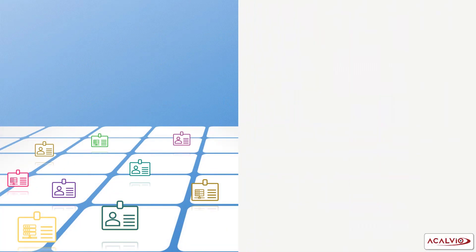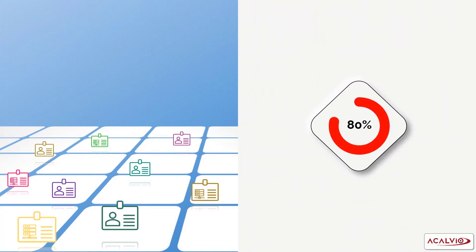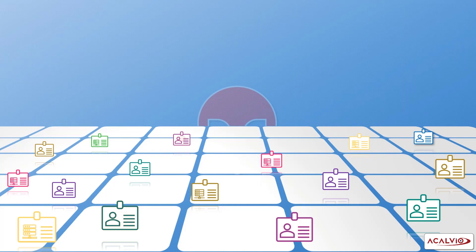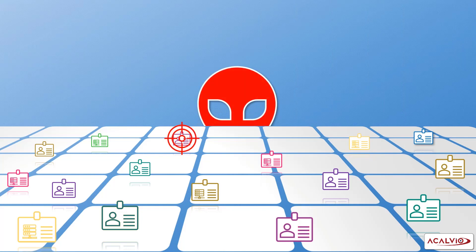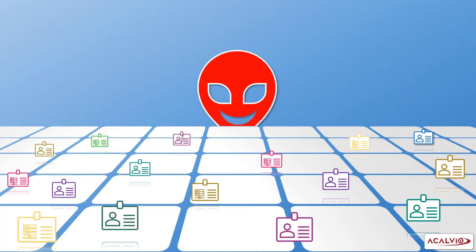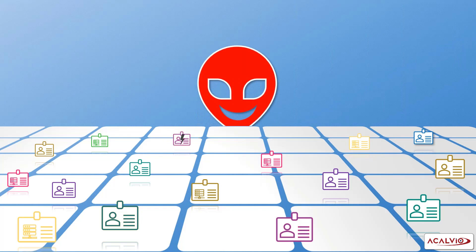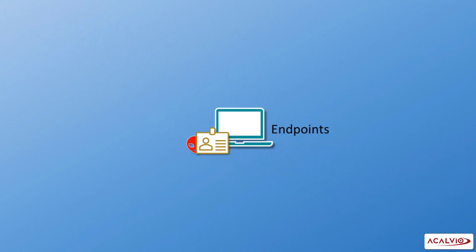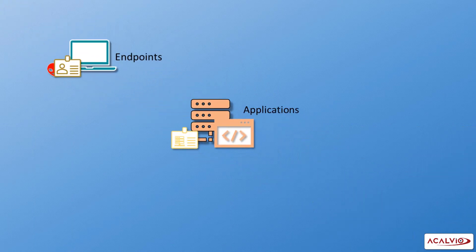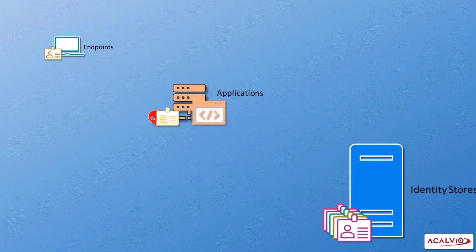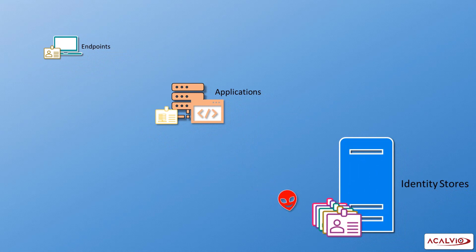Identity threats are involved in 80% of all cyberattacks. Sophisticated attackers like APTs and ransomware actors typically start a campaign with an identity compromise. Attackers can exploit identities on endpoints, applications, and even identity stores.